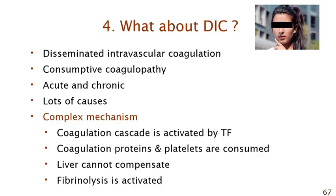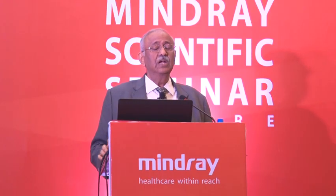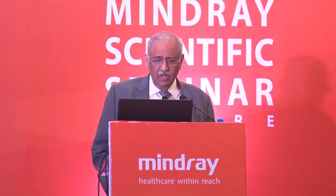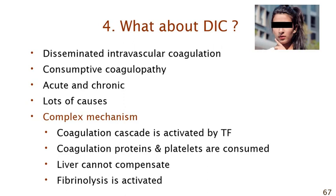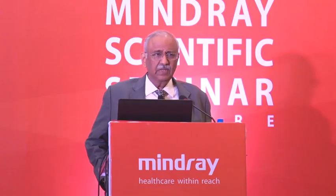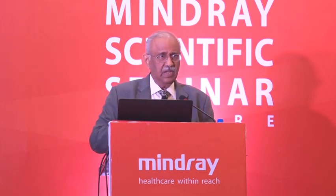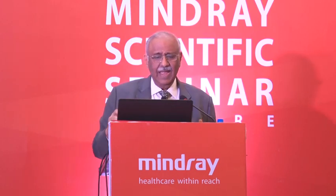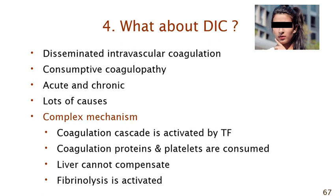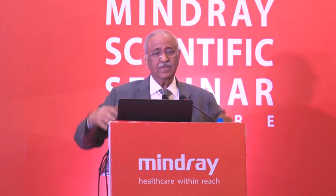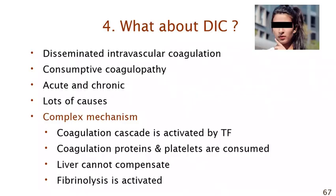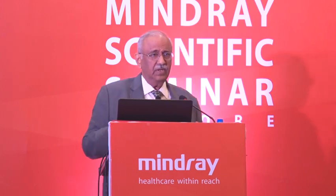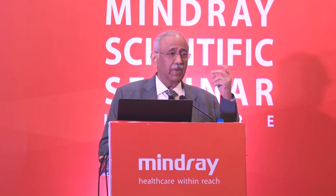Moving to DIC — disseminated intravascular coagulation, also known as consumptive coagulopathy. DIC could be acute or chronic. The center of its complex pathophysiology is that the coagulation cascade is activated — the intrinsic, extrinsic, and common pathways — because of tissue factor. As a result, many clotting factors and platelets are consumed and you could bleed. The liver is unable to compensate for the rate of consumption, and fibrinolysis is also activated, which can further cause bleeding.